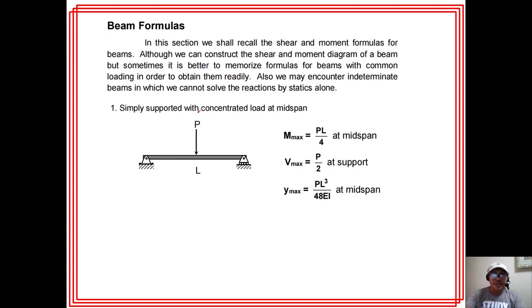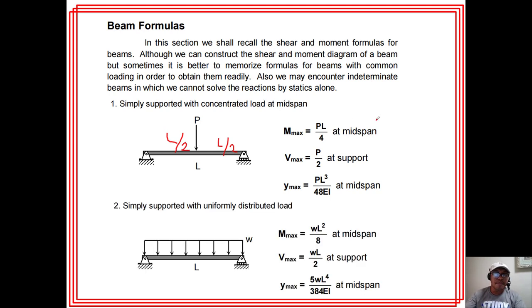Case 1: simply supported beam with concentrated load at mid-span — span L, half-span L/2 on each side. Case 2: simply supported beam with uniformly distributed load — maximum moment WL²/8, maximum shear WL/2. The total load is WL with two supports at both ends, so WL/2 per support. For the concentrated load case: total load P divided by 2, so P/2 is the reaction and also the maximum shear.